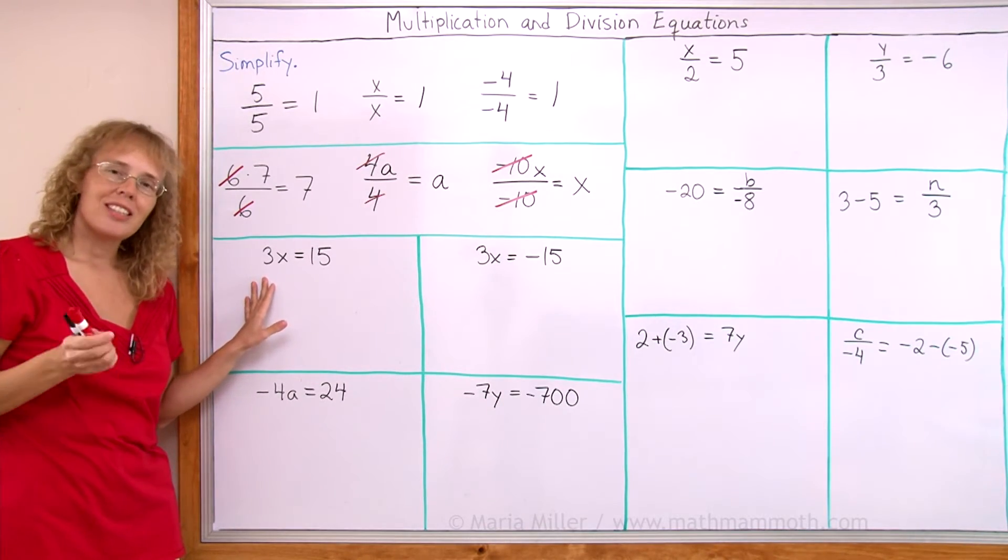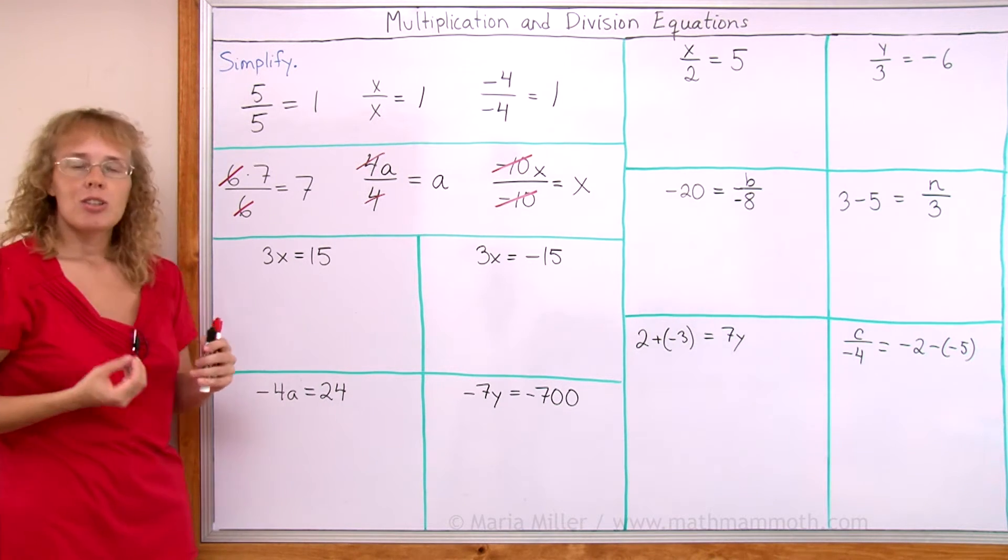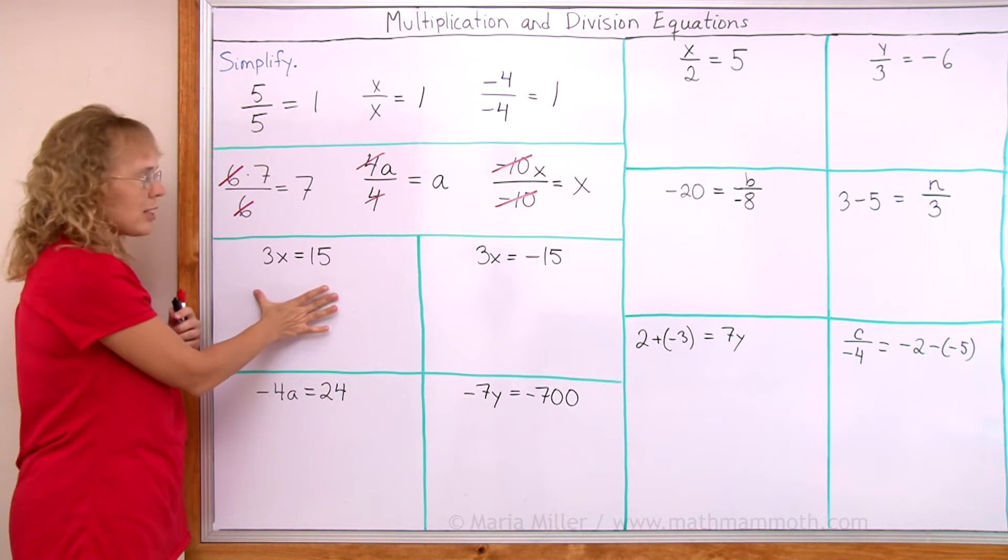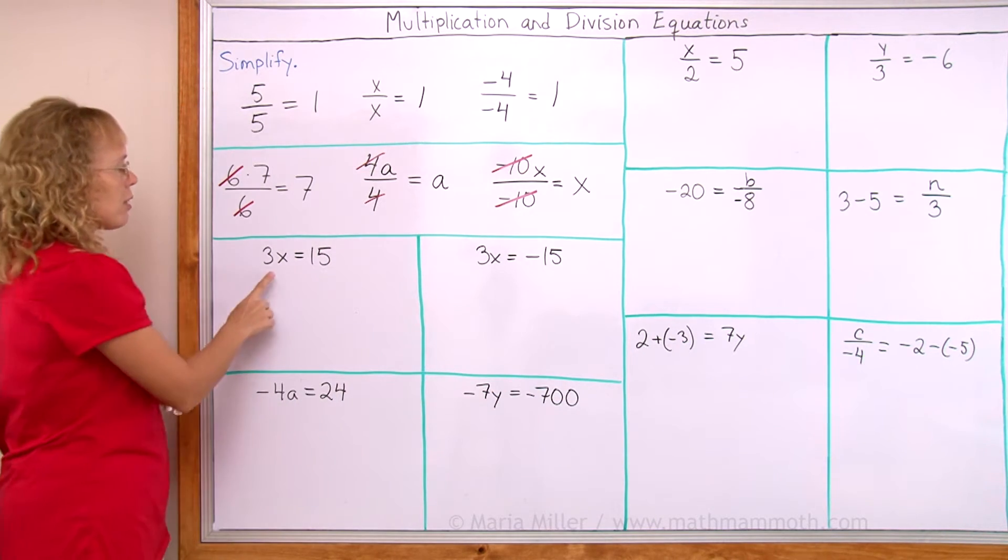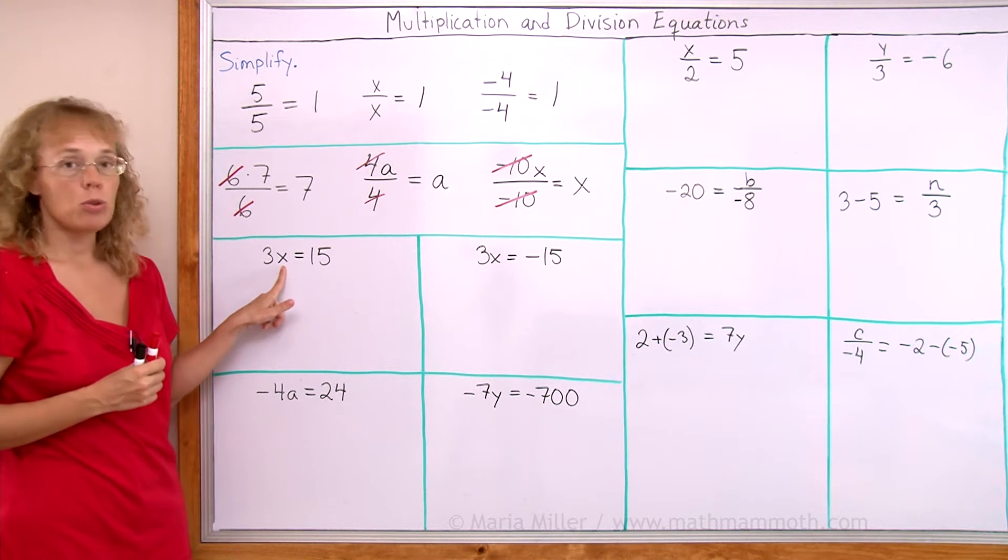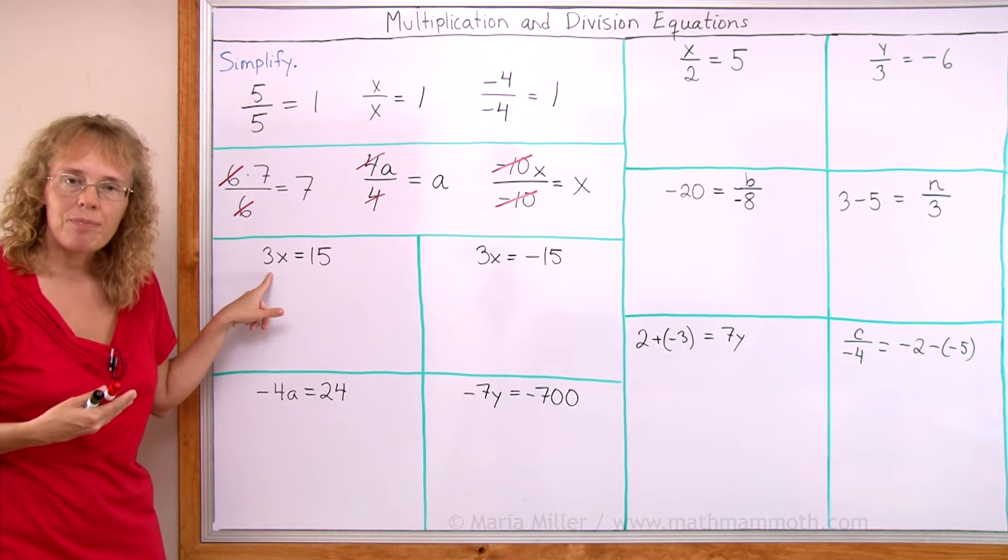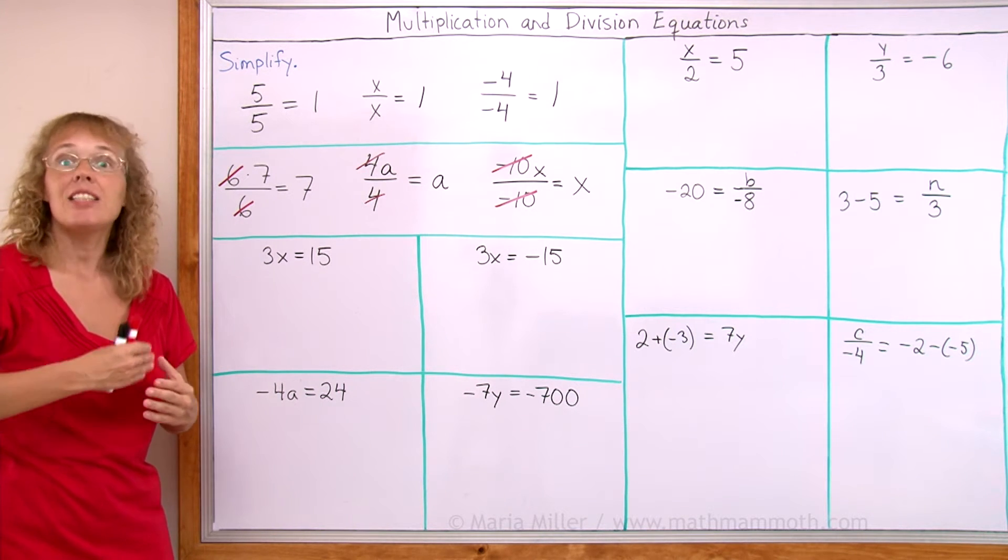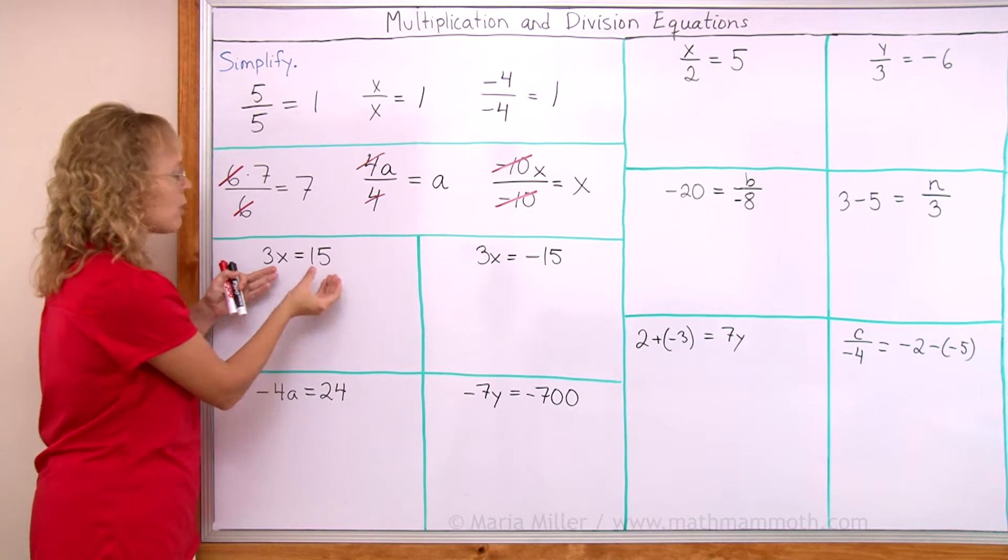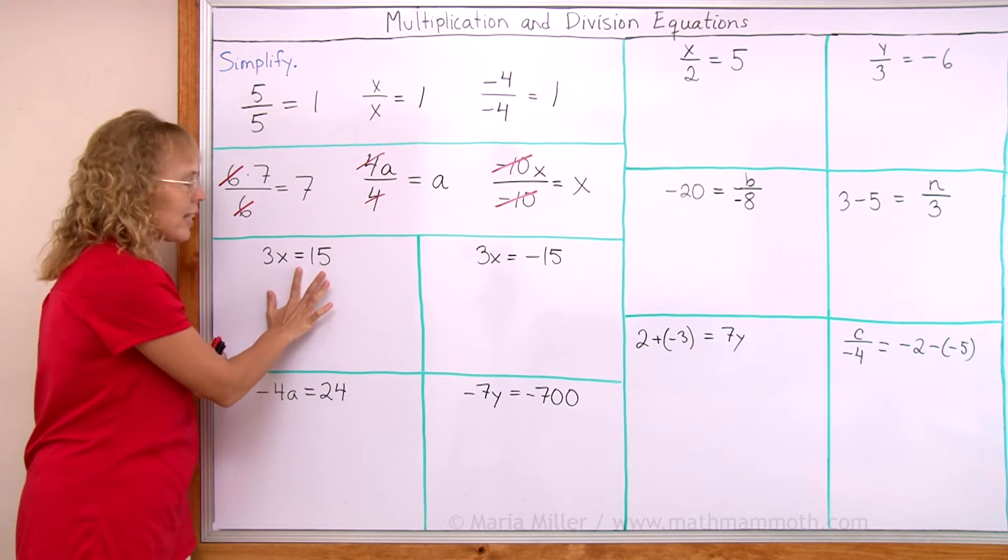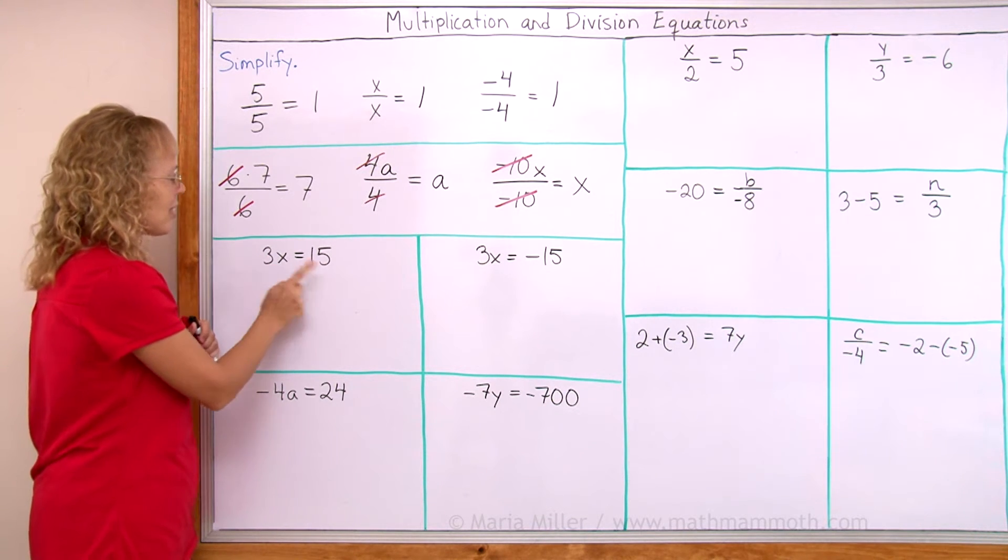Now, here's a very simple equation. You probably can see that the answer is, the solution is x equals 5, right? But we need to learn how to write the solution even for the simplest of equations. Because then we will use that in more complex equations over there. The principle to use is that we want to have x alone on this side. We want to isolate x. So since x is multiplied by 3, we will undo the multiplication by 3 by dividing both sides of the equation by 3. And you are allowed to do that. If you do the same thing to both sides of the equation, then the equality still stays there. The balance stays balanced. Remember the balance? Okay. So we divide this and this side by 3.